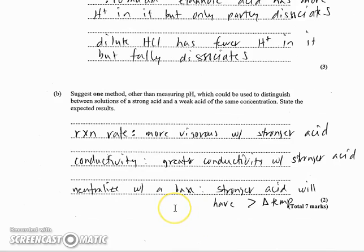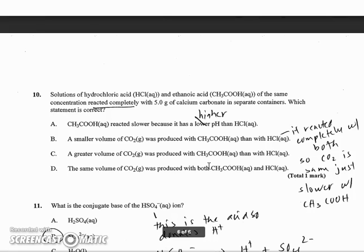And B, suggest one method other than measuring pH. You could look at reaction rate. It would be more vigorous with a stronger acid. You could look at conductivity. It would be greater conductivity with the stronger acid. Or you could neutralize it with a base and you would see the stronger acid would have a greater temperature change during that neutralization reaction.